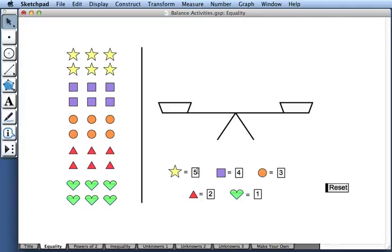If I'd like to change the value of any of these five shapes, I can do that easily. For example, if I'd like to change the value of square from 4 to, say, 6, I simply highlight the 4 and type 6.